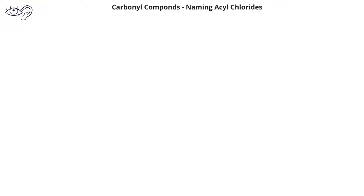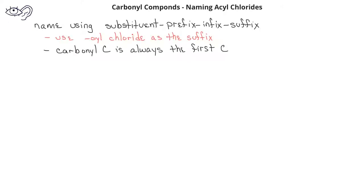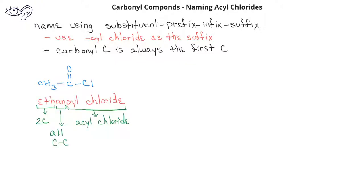Once we've learned to name carboxylic acids, naming acyl chlorides is fairly similar. The difference is that instead of using the suffix -oic acid, we change the suffix to -oyl chloride (O-Y-L chloride). To name this first compound, which has a two-carbon chain including the carbonyl carbon, we would name it ethanoyl chloride.